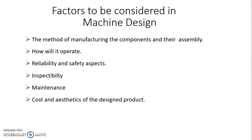Inspectability is another factor — the product produced must pass the inspection stage. When the product is installed for actual working, maintenance plays a very important role. Finally, cost and aesthetics must be considered: overall cost should be evaluated, and aesthetics refers to the shape and size of the final finished product. These are all the factors that must be considered for machine design.